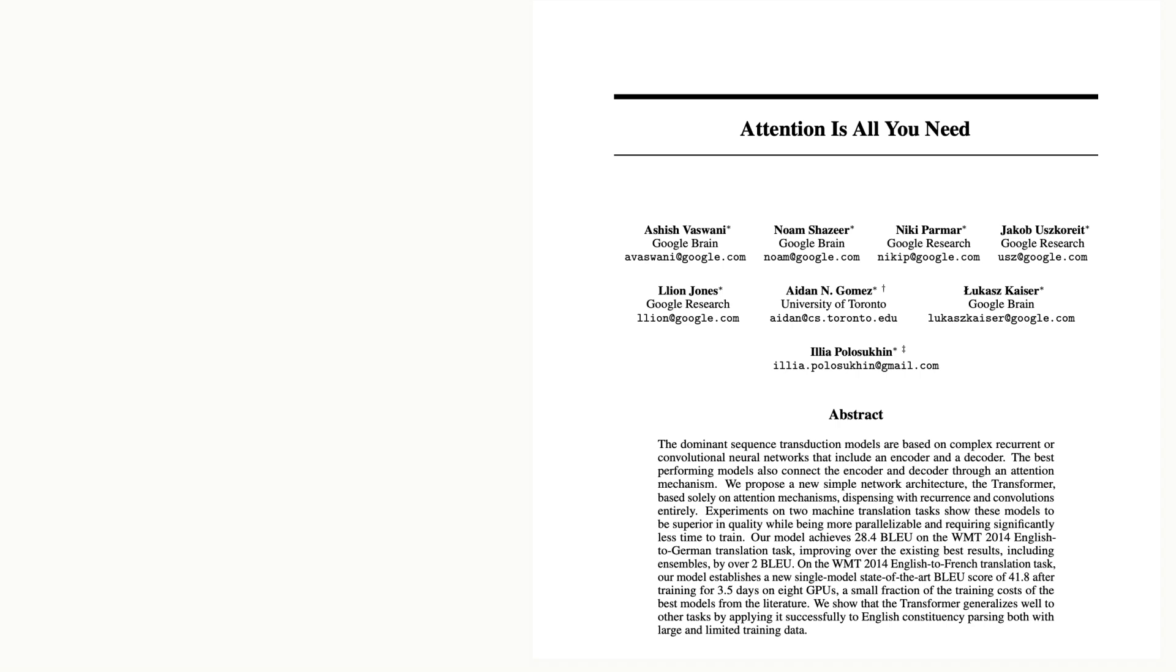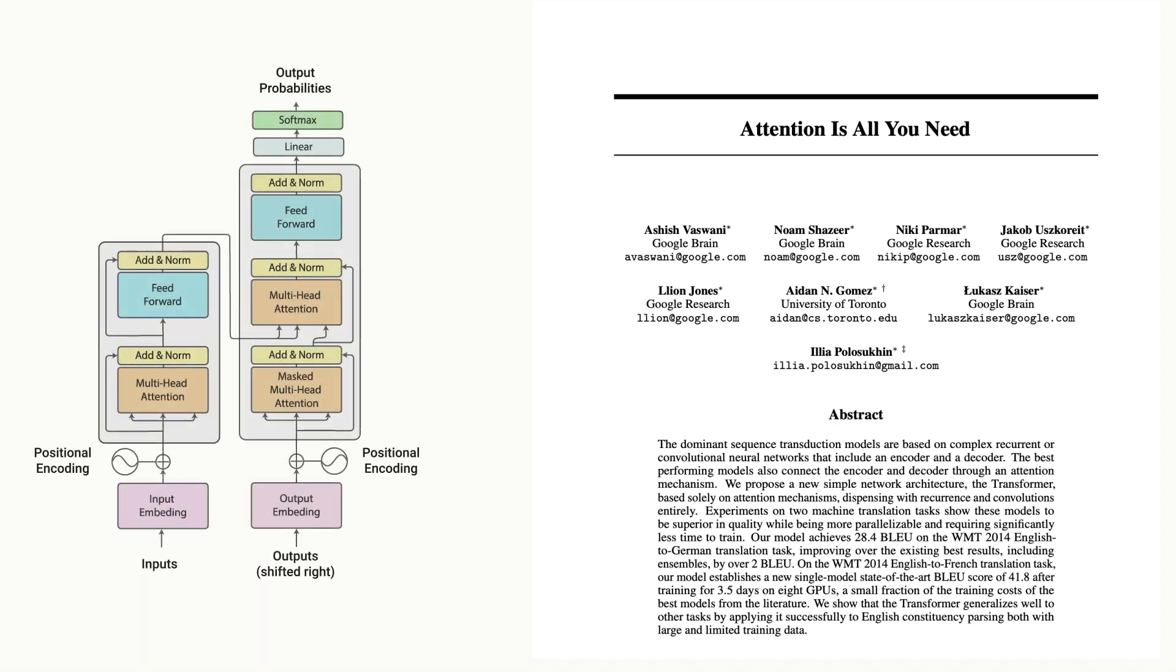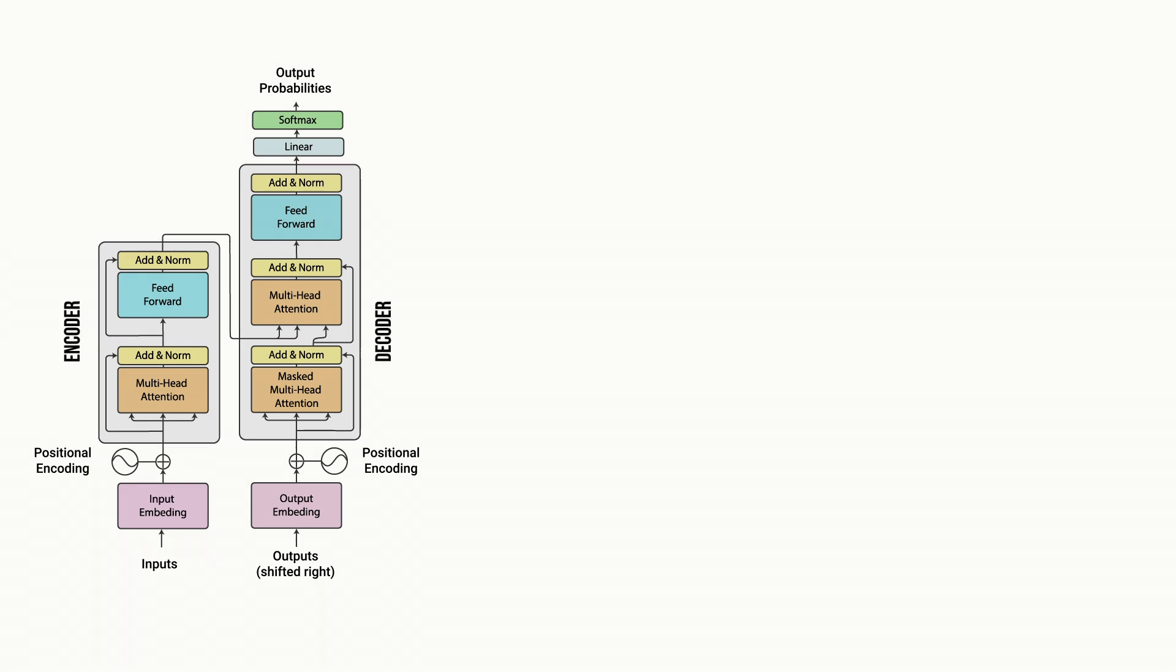To deal with this inability to parallelize data, the authors of the attention is all you need paper came up with a new architecture that they call transformers. This transformer still employs an encoder decoder structure like sequence models, but they do away completely with the recurrent or sequential nature of these sequence networks and instead they process the information that they have been given solely using attention.